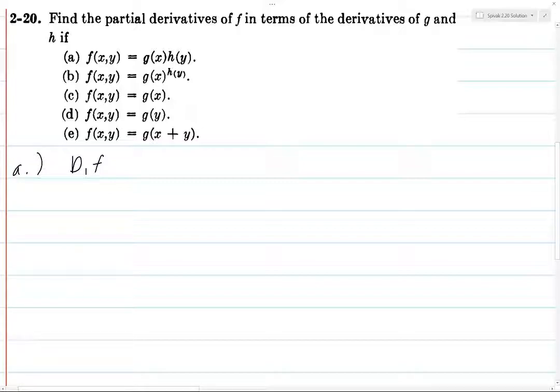then h of y, that's just a constant. So that stays there, and you end up taking g prime of x, and you just keep h of y there.